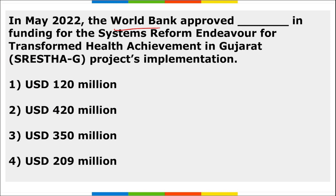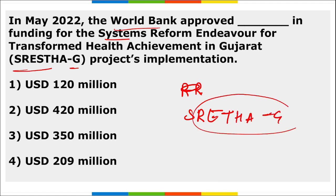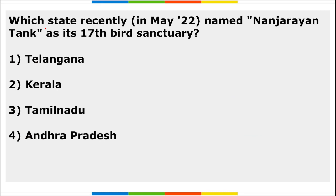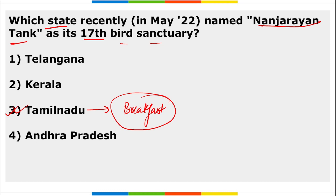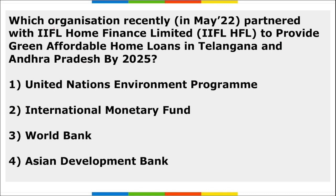The World Bank approved $350 million funding for the SRESHTA project — Systems Reforms Endeavour for Transformed Health Achievement in Gujarat. Tamil Nadu named Nanjarayan Tank as its 17th bird sanctuary. The breakfast scheme for primary school students was launched by Tamil Nadu Chief Minister MK Stalin.